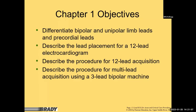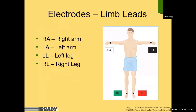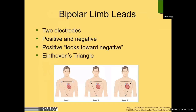With electrodes, our four primary limb leads are right arm, left arm, left leg, and right leg — with right leg serving as a ground or neutral. All of these leads have the ability to be bipolar, meaning they can go both ways, having both positive and negative polarity. This is important for triangulation and lead interpretation. With bipolar leads, we have two electrodes — both positive and negative — and it's the positive lead that looks towards the negative.